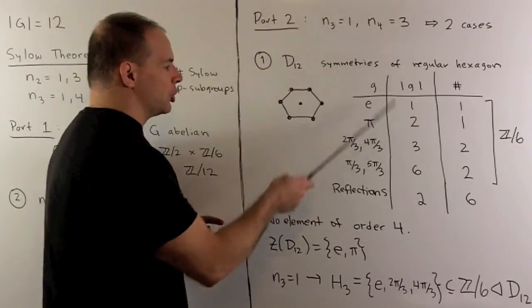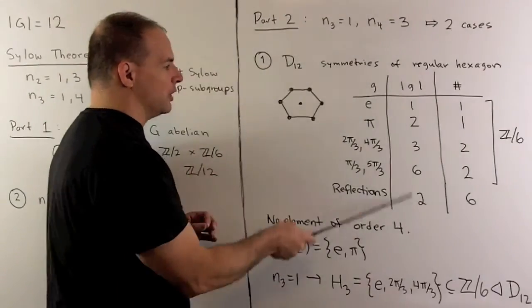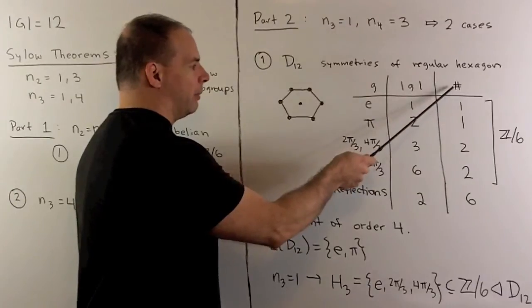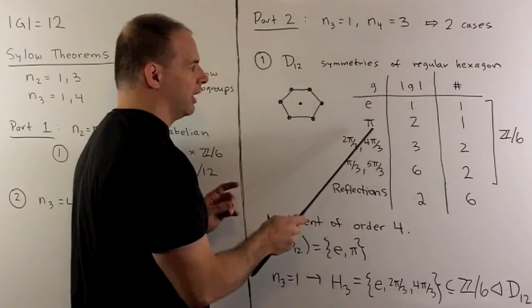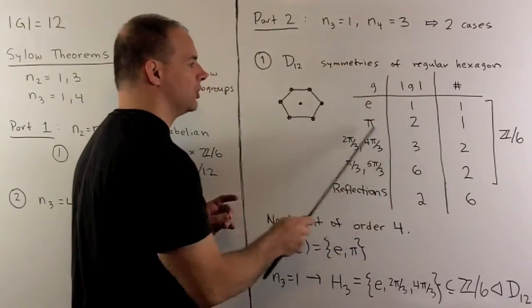Now, if we look at our chart, so here's the order of each group element. Here's the number of group elements of that order. And note, I've split elements of order 2 into two pieces.